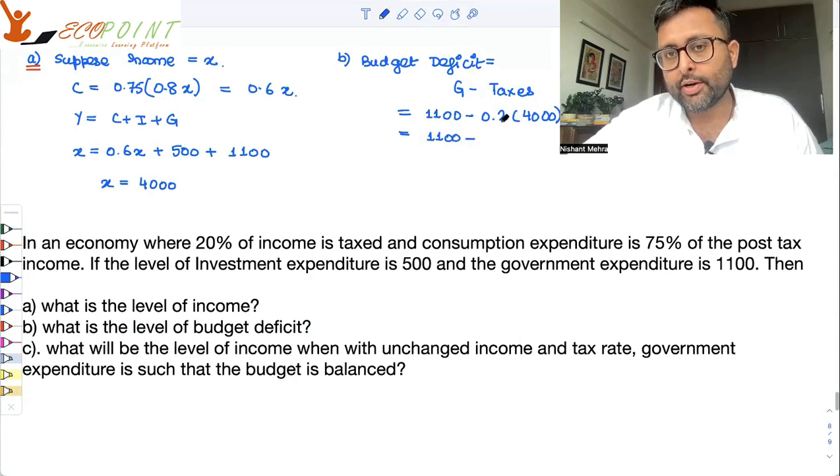It is 1100 minus 20% of 4000 is 800. That comes out to be 300.